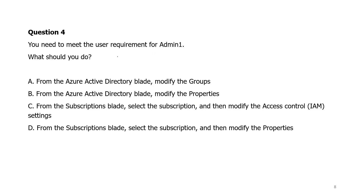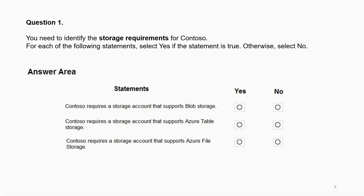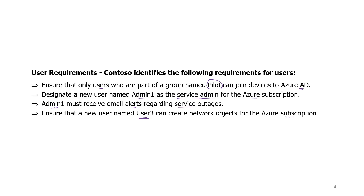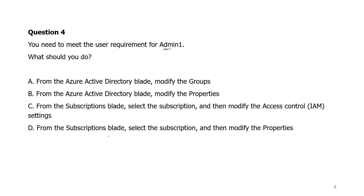Question 4: You need to meet the user requirement for admin1 — what should you do? The requirements are: designate a new user named admin1 as service admin for the Azure subscription, and ensure admin1 receives email alerts regarding service outages. To make a user the service admin, go to the Subscription blade, select the subscription, and modify the subscription properties to update the service admin. Therefore, option D is the correct answer.